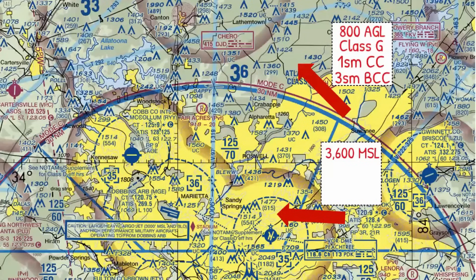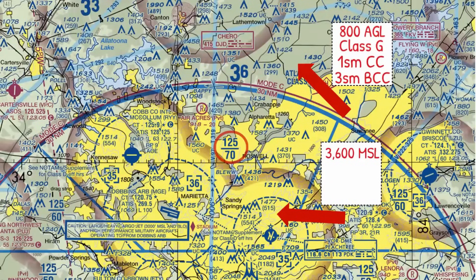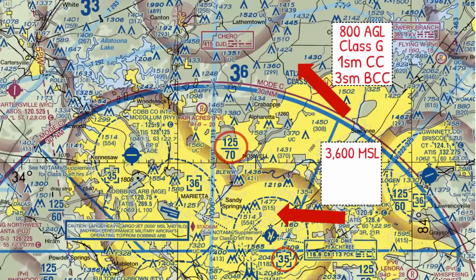What if you're right here at 3,600 feet MSL? What type of airspace are you in and what are your visibility and cloud clearance requirements? Remember, the VFR sectional tells you just about everything you need to know about controlled airspace. The bottom of the Class B airspace in this area begins at 7,000 feet. The top of the Class D airspace ends at 3,500 feet MSL. If you said Class E airspace, you're right. And your visibility and cloud clearance requirements? Three miles and basic cloud clearance.